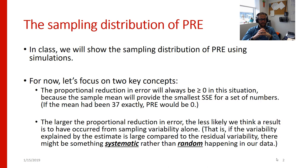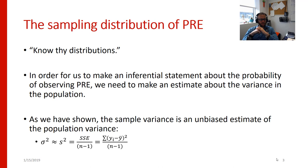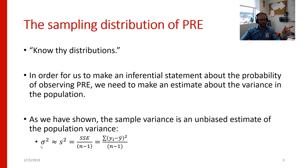This is why we talk about it being very important to know your distributions. In order for us to make an inferential statement about the probability of observing a PRE of a certain value or larger, we need to make an estimate about the variance in the population. The sample variance is an unbiased estimate of the population variance — our population variance is sigma squared. We can get an unbiased estimate of it by calculating the sample variance s squared, which is the sum of squared errors within our data divided by n minus 1.